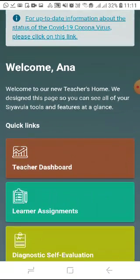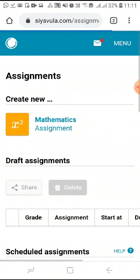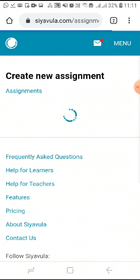On the home page under quick links, click on learner assignments. This will take you to a page where you first need to select the subject for your assignment.